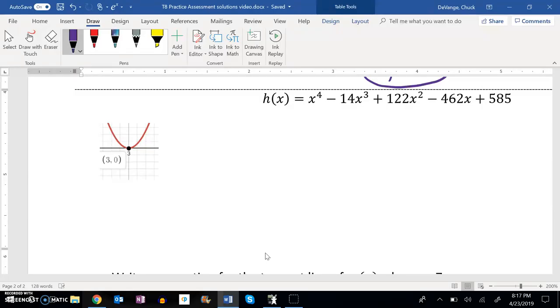We're given this little piece of the graph, and I notice it has a zero at 3, and it's a repeated zero. That has a multiplicity of at least 2. So it happens twice.